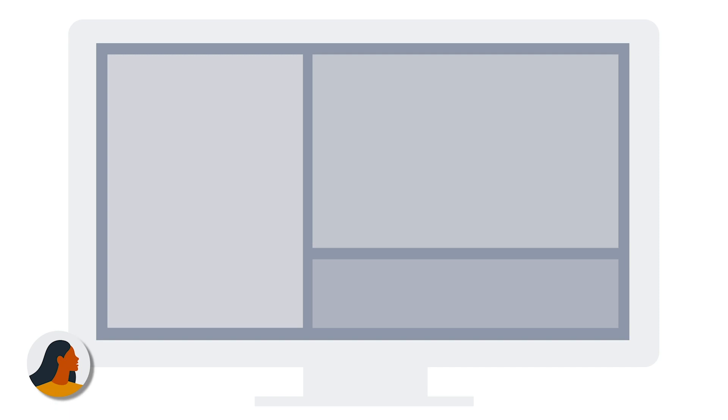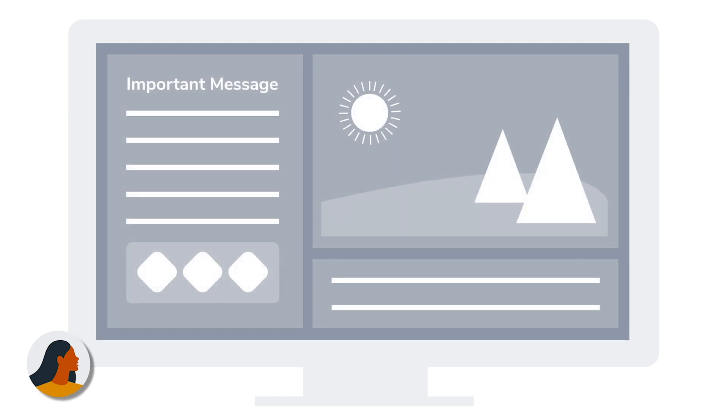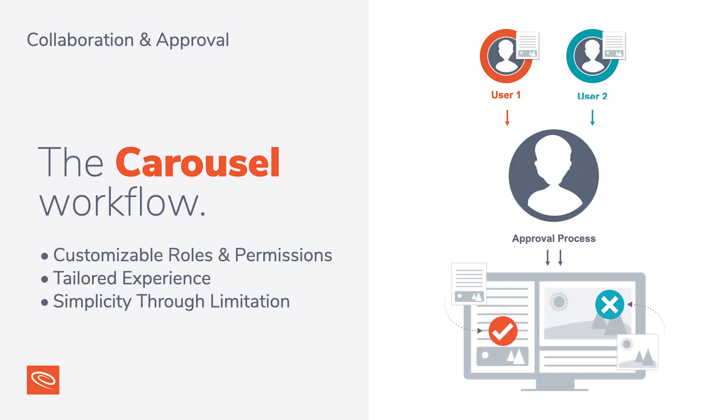In Carousel, you have what we call a channel — that's the full screen. On your channel, you have what we call zones, which is your channel divided up into sections. Then we also have bulletins, which hold your content and live in those zones on your channel. Carousel's approval workflow holds content created by users until an administrator approves it, allowing more people to submit content while maintaining control over what is displayed — as with the University of Connecticut, where students log in and share information pertinent to students on campus.